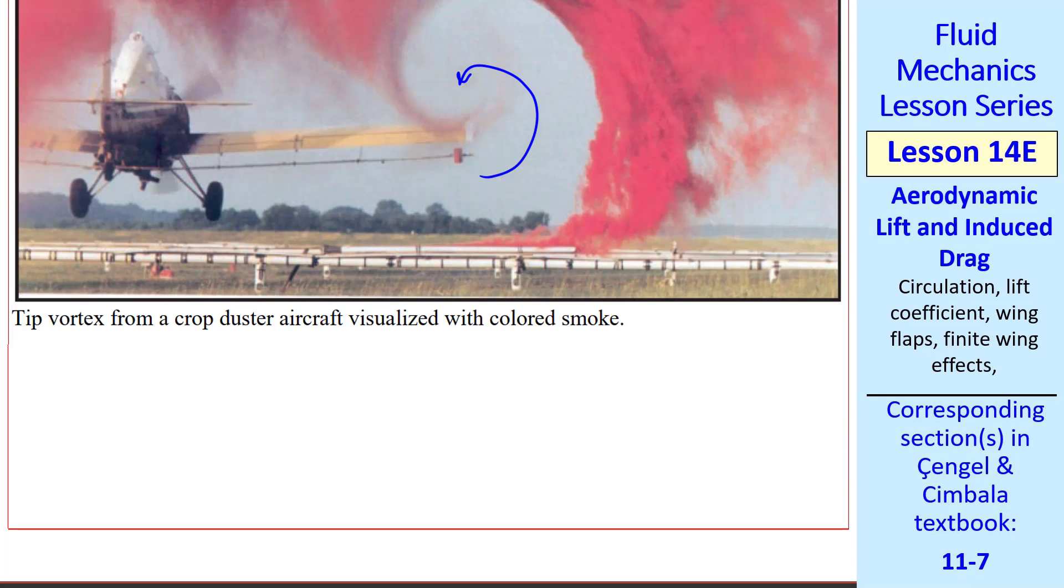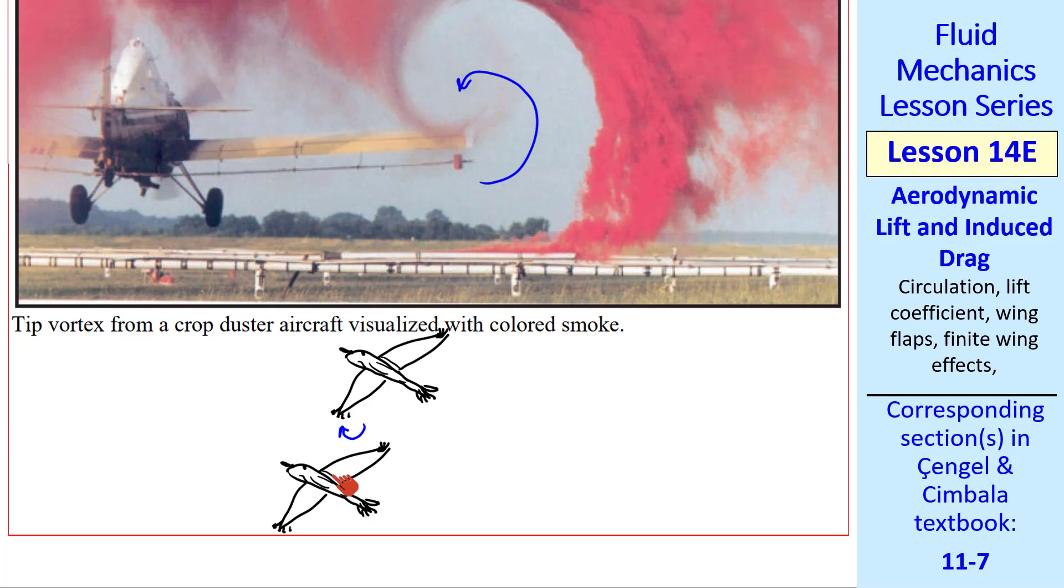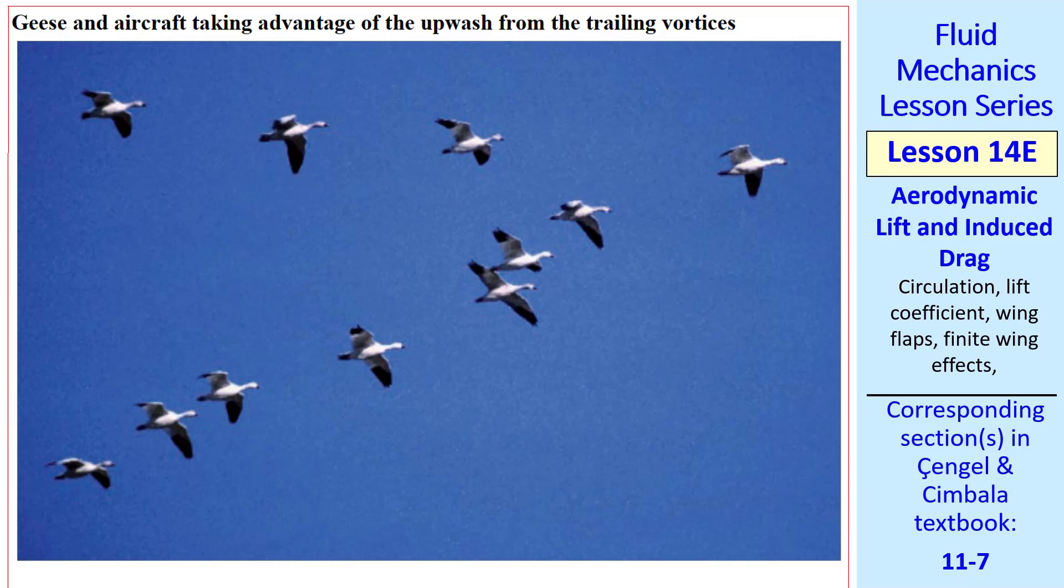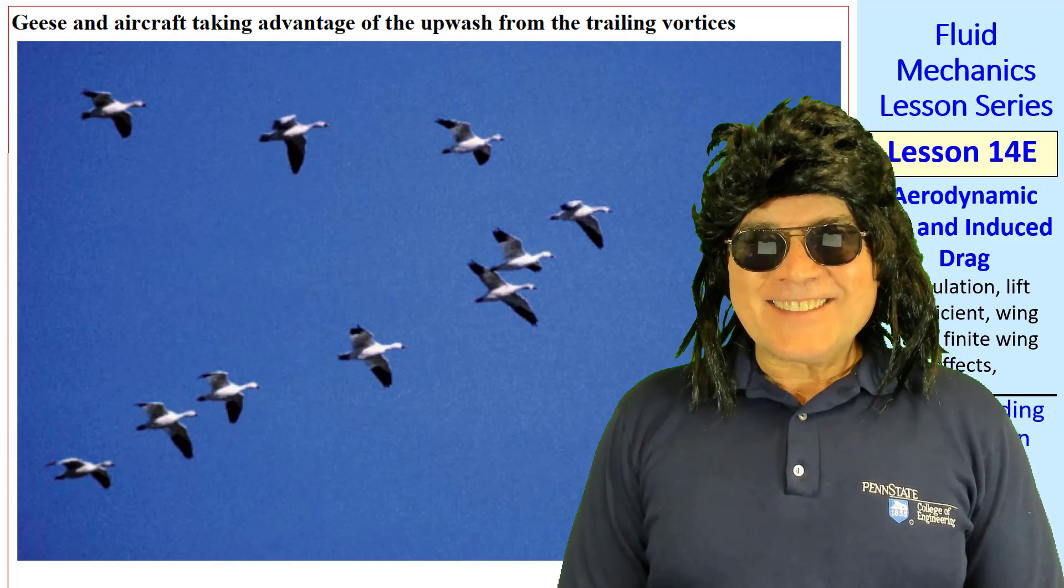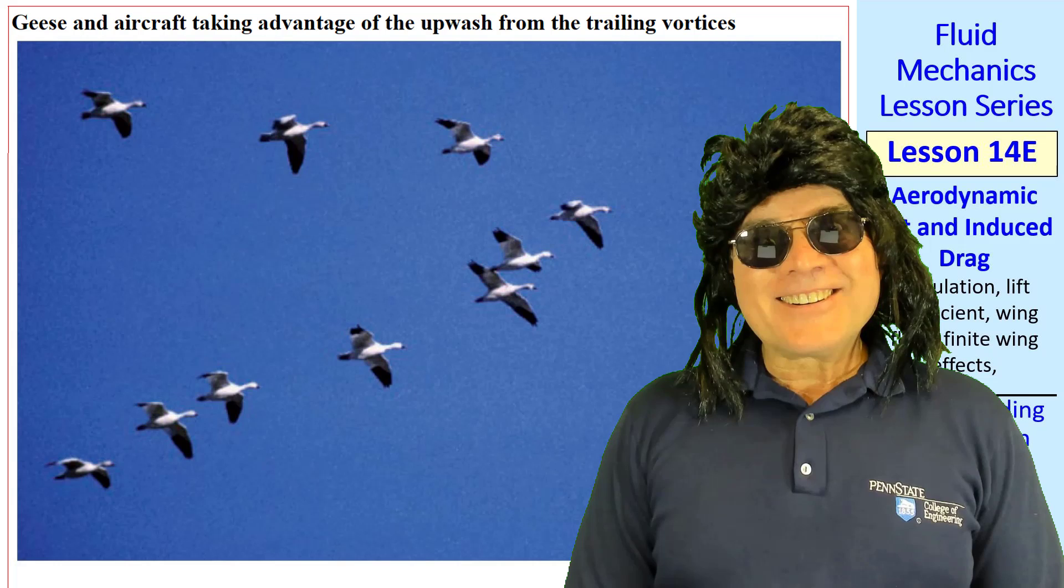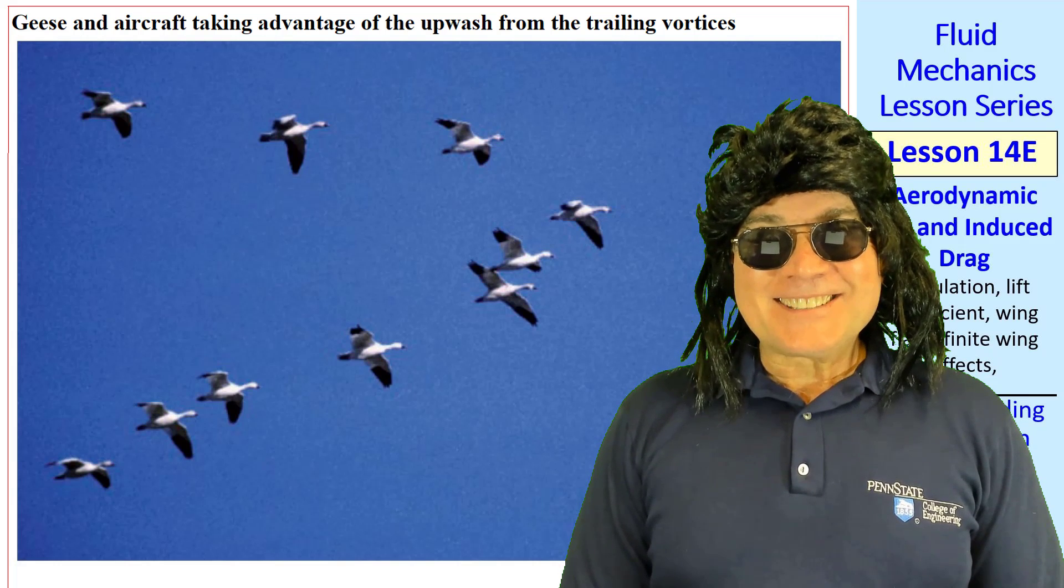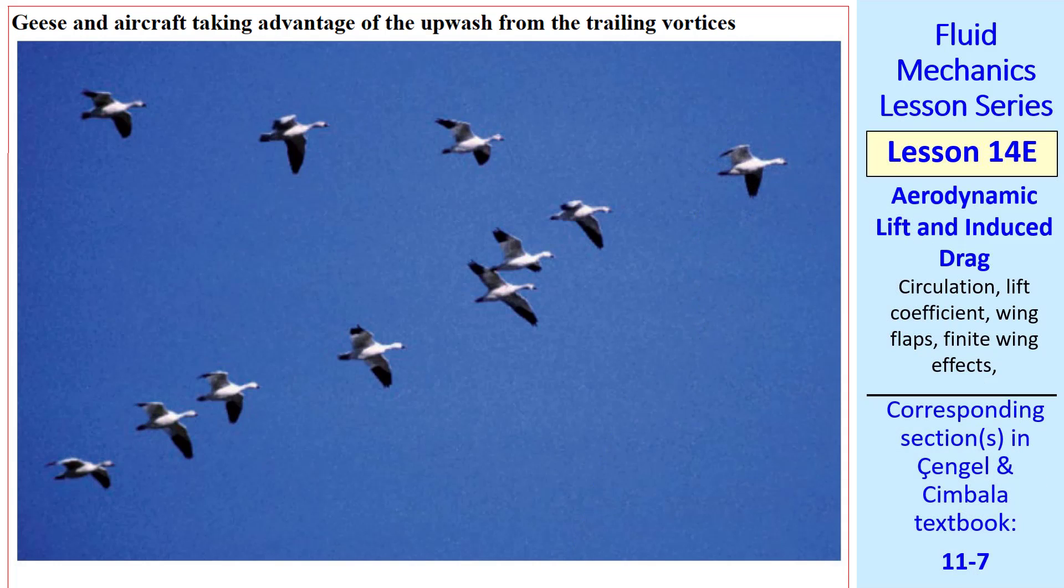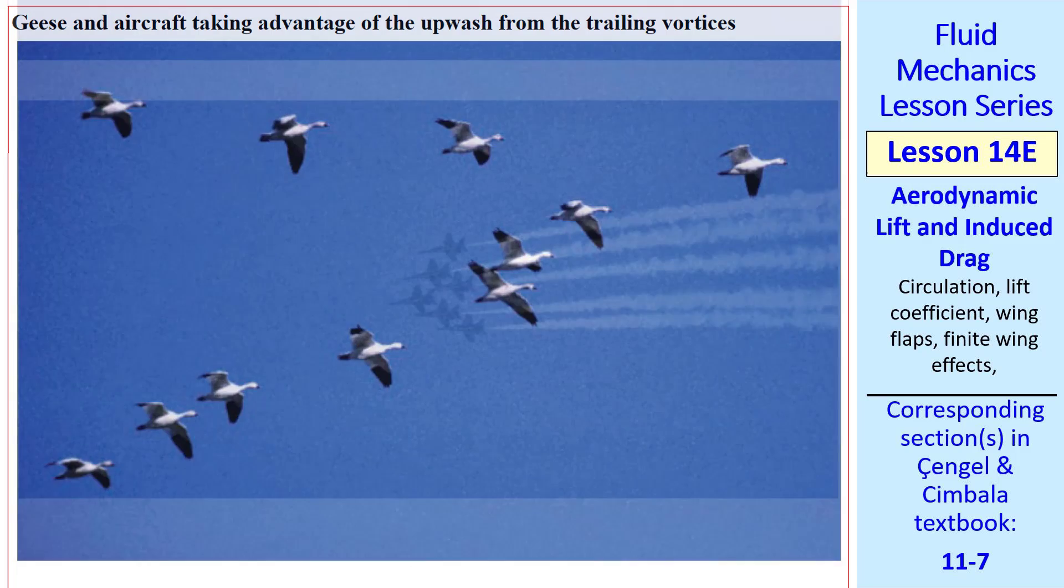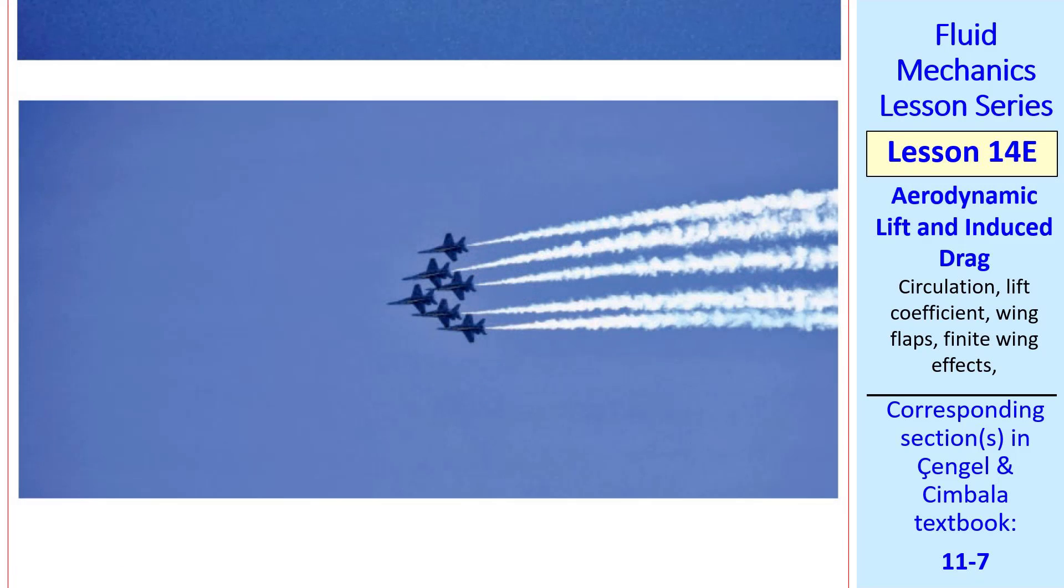Tip vortices aren't all bad. You sometimes see birds flying like this, where this bird takes advantage of the upwash from this bird's tip vortex. This bird therefore has to expend less energy to fly. That's why geese fly in V formation. Hey, dude, do you know why one side of the V is always longer than the other? No, why? Because there's more geese on that side, dude. Thank you for that important piece of information, Joe.